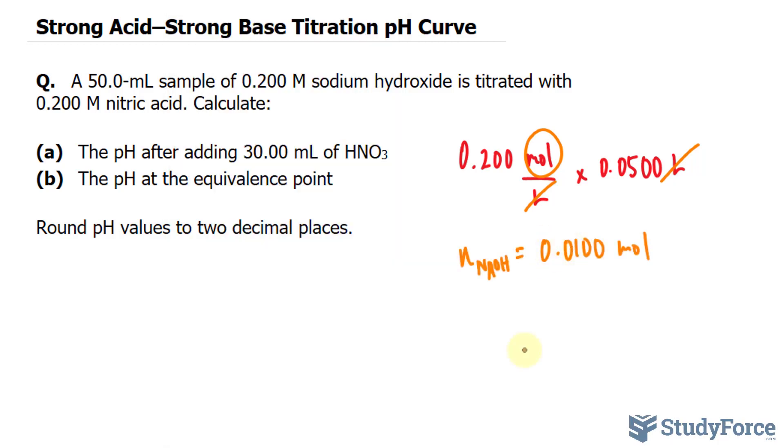Now given that NaOH is a strong base, if we write out its dissociation equation, you'll end up with OH minus plus Na ions. Strong bases completely dissociate. So the amount of moles of NaOH is equivalent to the amount of moles of OH minus. And we need this for later when we calculate the pH. So the mole amount of hydroxide ions is the same thing as this.